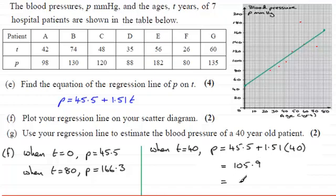And if I round this to three significant figures, then it's going to be 106. And the units would be millimeters of mercury. Okay. To three significant figures, 3SF for short.